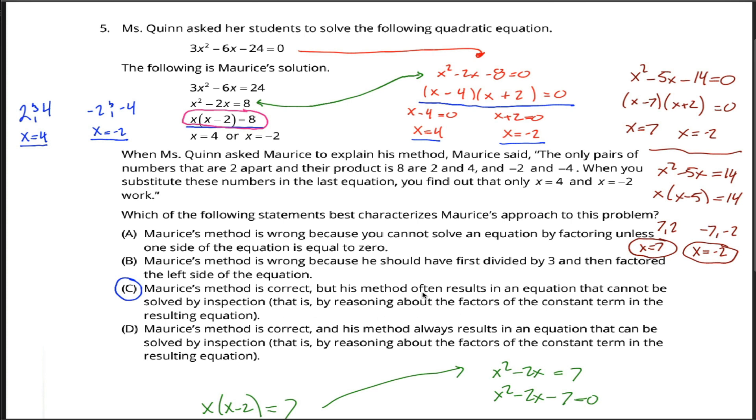So this is ridiculous. Assuming you would answer D for a student who solved things this way, I argue that you would have to answer D for Maurice as well. But this test feels differently. This test seems to think that C is the correct answer for Maurice's solution. So I guess that's what we're going with here. So dumb.